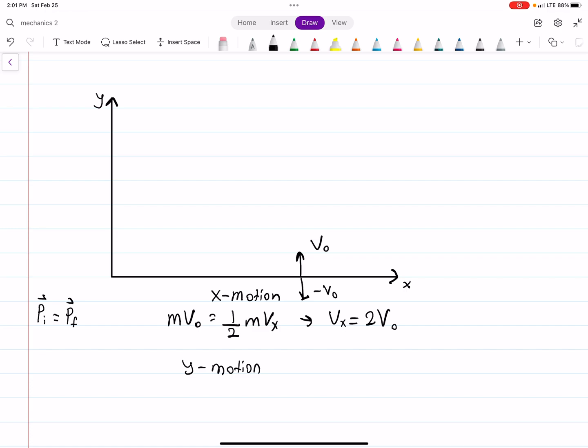So one-half MVY must equal negative one-half MV0 because they're going in opposite directions. If the other object did not go at minus V0, then we wouldn't have conservation of momentum.